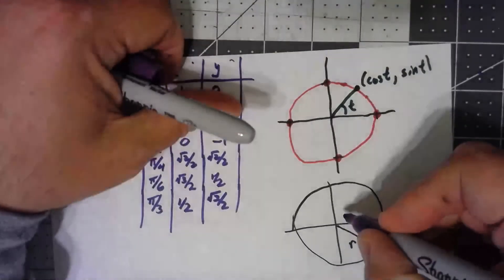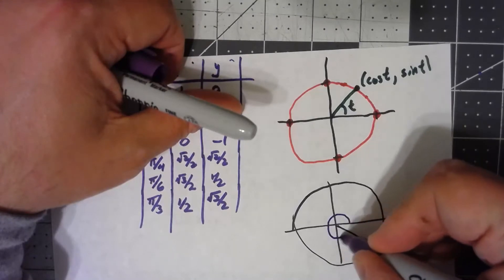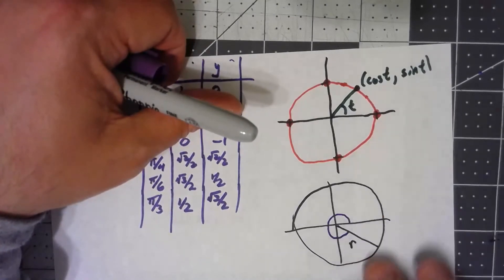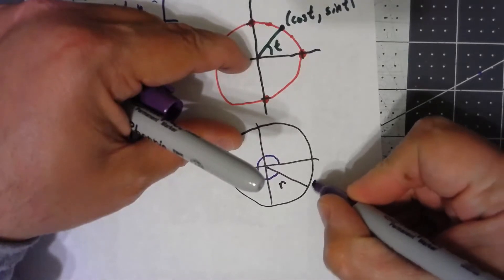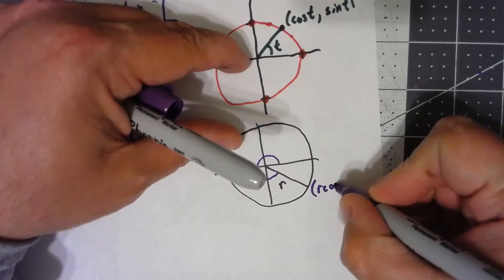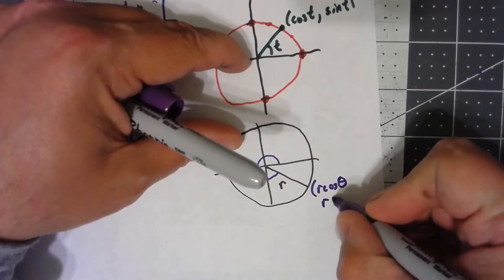Again, as long as I measure my angle around this way, in standard position, this point comes out to be r times the cosine of theta, r times the sine of theta.